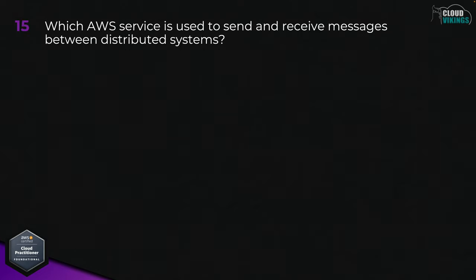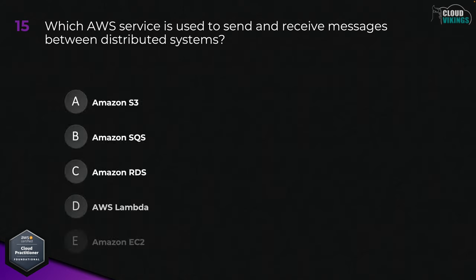Question fifteen: which AWS service is used to send and receive messages between distributed systems? Options are: A, Amazon S3; B, Amazon SQS; C, Amazon RDS; D, AWS Lambda; or E, Amazon EC2. The correct answer is B, Amazon SQS.